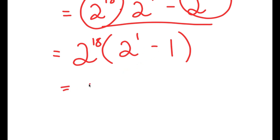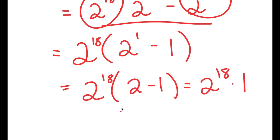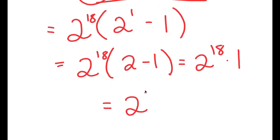And this is equal to 2 to the power of 18 times — well, 2 to the power of 1 is 2. So I get 2 minus 1, which equals 2 to the power of 18 times 1, which is equal to 2 to the power of 18. So I get 2 to the power of 18 as my answer.